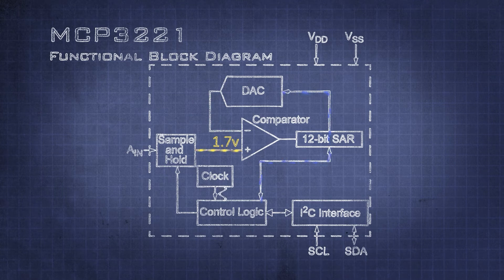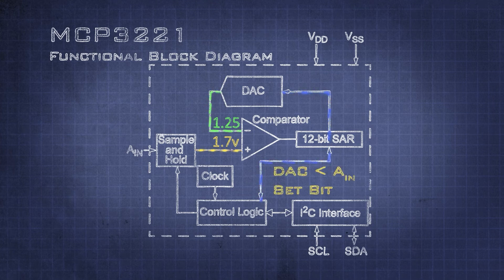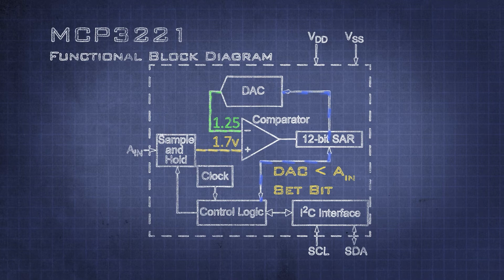On the next clock pulse, the process is repeated. The next bit is set high and the comparison is made again. We check the result of the comparison to see if we need to keep this bit set or clear it.